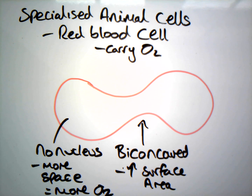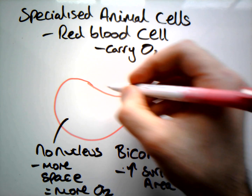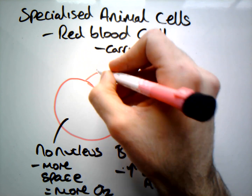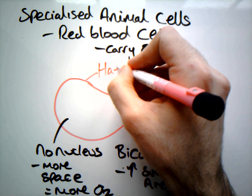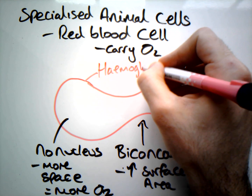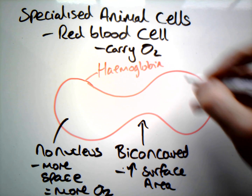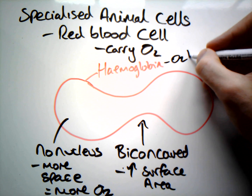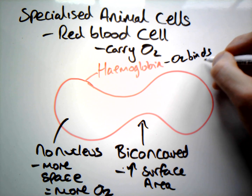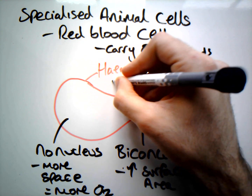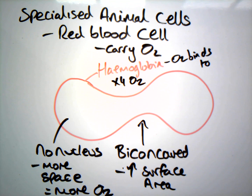Our final key feature is the reason that it's red. It has a substance called haemoglobin in it. Haemoglobin contains an iron ion, which is why it's red, and this is what our oxygen binds to. You can have four oxygens per haemoglobin, and that's all the specialised features you need to know about a red blood cell.